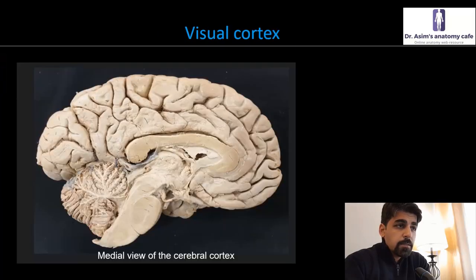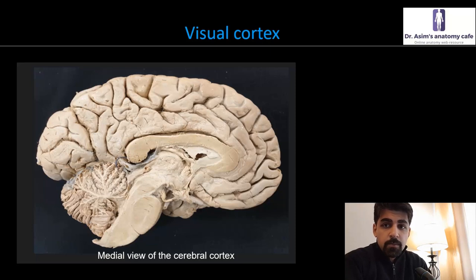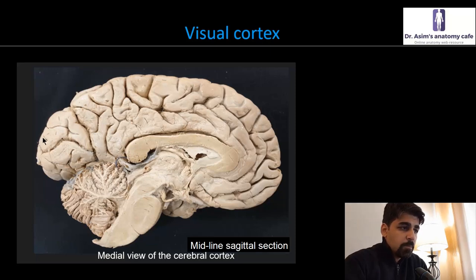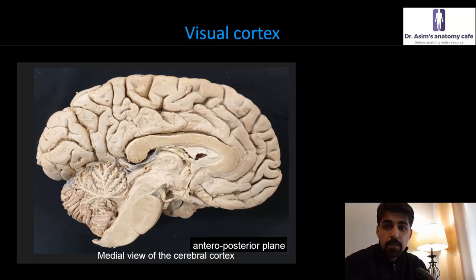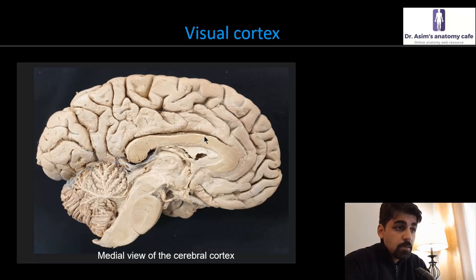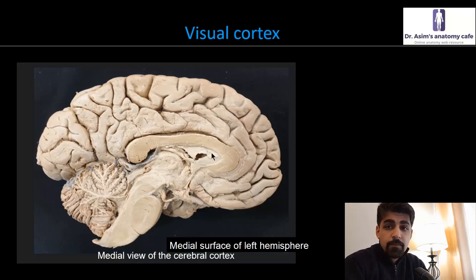Let's start with this image of a prosection. Whenever you look at any prosection, the first step is to orientate that prosection. What you're looking at here is basically a midline sagittal section taken through the cerebral hemispheres. A sagittal section means any section taken in an anteroposterior plane. This section has been taken through the midline in a sagittal plane, so the right cerebral hemisphere has been removed, and what you're looking at is the inner aspect or medial surface of the left cerebral hemisphere.